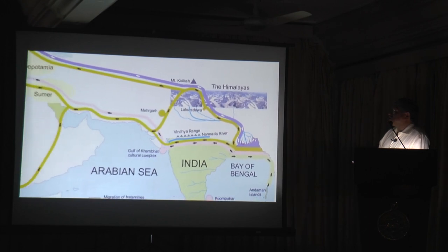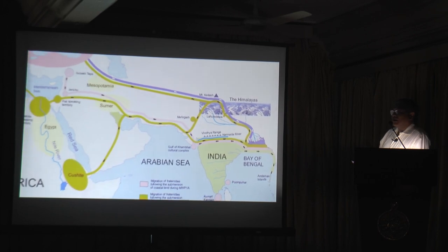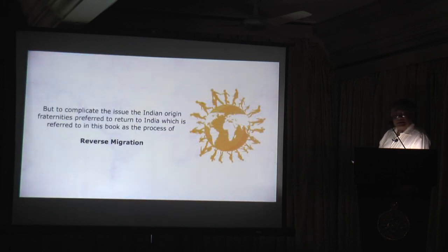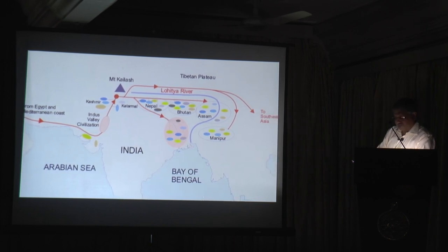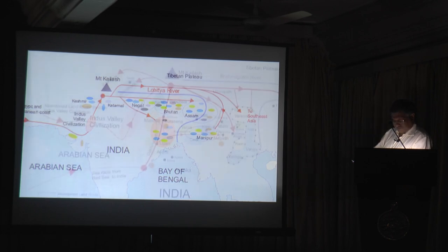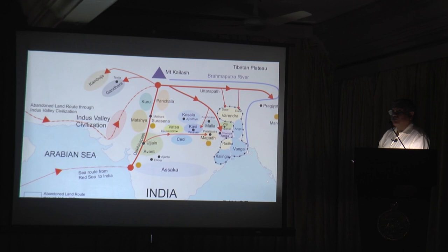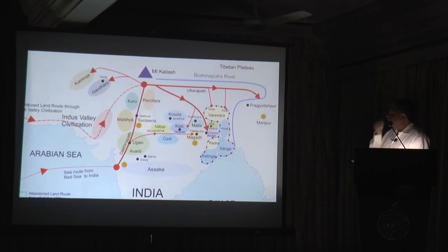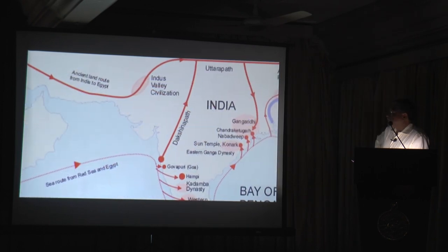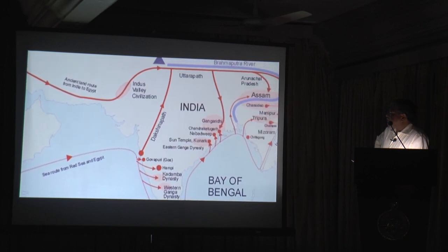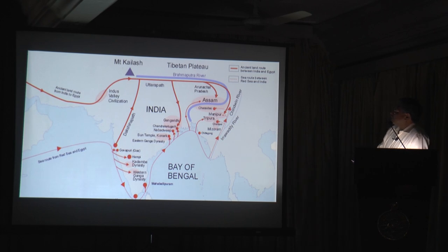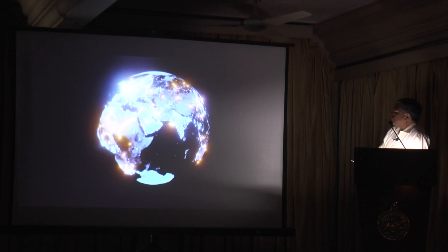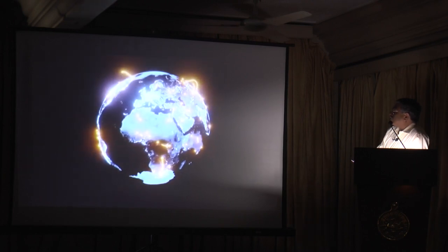It would have been much easier to arrange the migration paths of early fraternities had the event stopped here. But to complicate the issue, the Indian-origin fraternities preferred to return to India — this is referred to as the process of reverse migration. They came back for various reasons: conflict between matriarchal and patriarchal fraternities, and as Christianity and Islam emerged in the Middle East, followers of Hinduism returned to their homeland due to religious persecution. Settlement of various reverse migration fraternities from different regions resulted in an admixture of genetic identities across India. It is extremely important that we understand the entire sequence of events of the migration of various genetic identities during different periods.